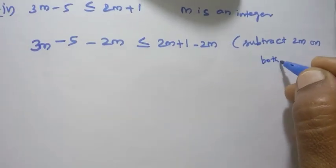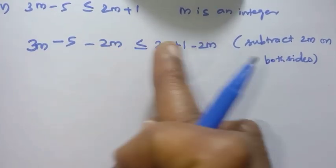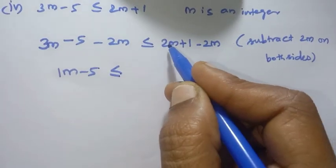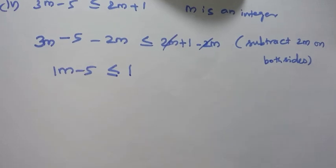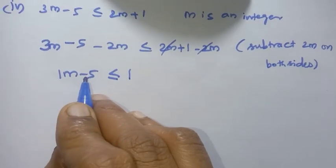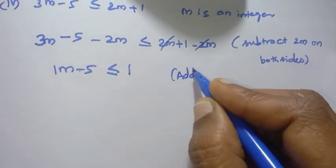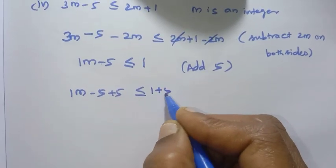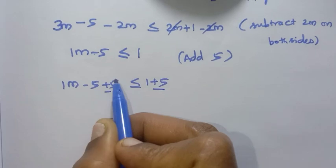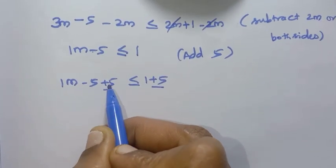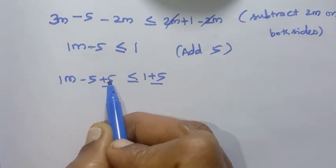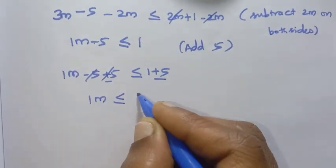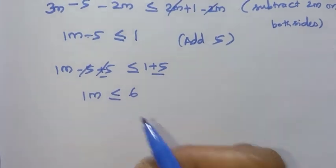Subtracting 2m from both sides: 3m minus 2m gives 1m, so 1m minus 5 less than or equal to 1. Then add 5 to both sides: 1m minus 5 plus 5 less than or equal to 1 plus 5. The minus 5 and plus 5 cancel, giving m less than or equal to 6.